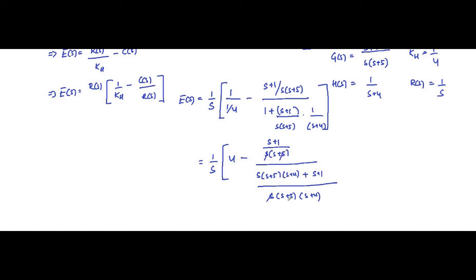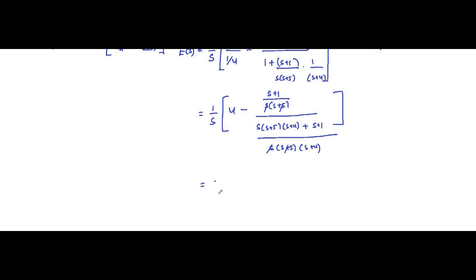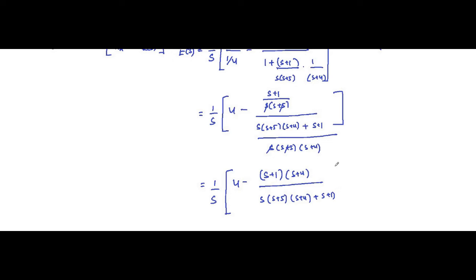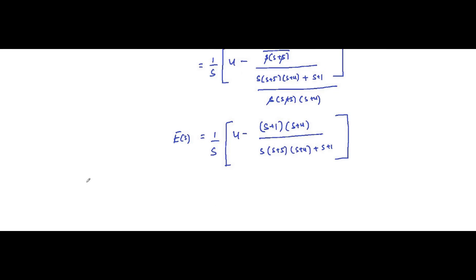Cancelling common factors: the s terms cancel appropriately, and (s+5) terms cancel as well. After simplification the expression becomes E(s) = (1/s) · [(s+4) - (s+1)] / [s(s+5)(s+4) + (s+1)]. Please be very careful when you simplify this expression.